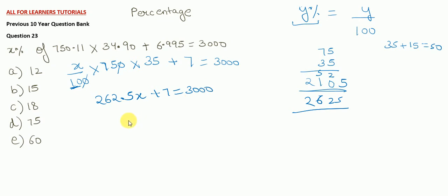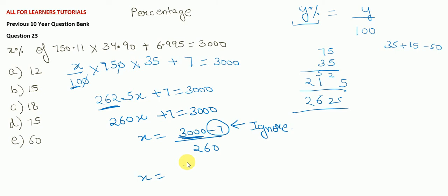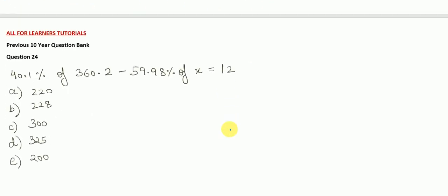3000 minus 2625. So, this should be 272. Make it as 260 approximately. Plus 7 is equal to 3000. Now, X by 100 equals 3000 minus 7 upon 260. Now, minus 7 is very small in comparison to 3000, right? So, you can easily ignore it. And after calculating this, you will get it as 11.11, which is nearest to option A, that is 12. So, see percentage questions are really very simple.